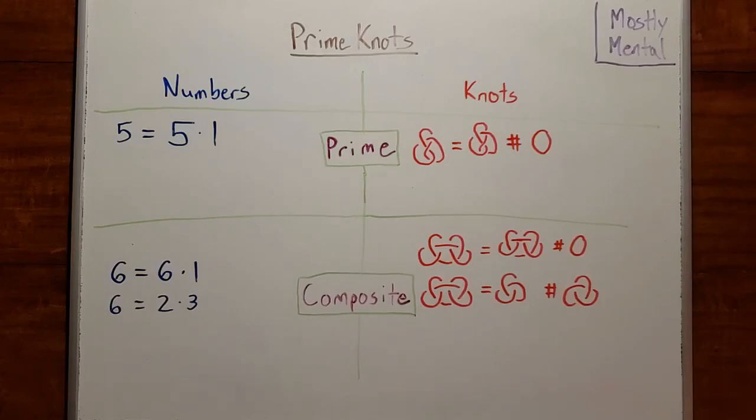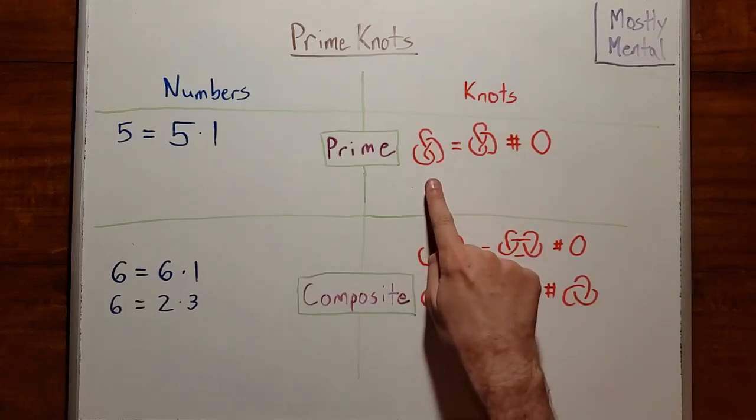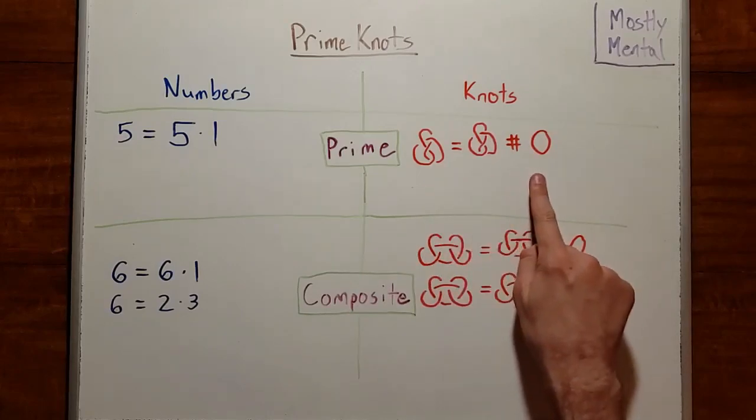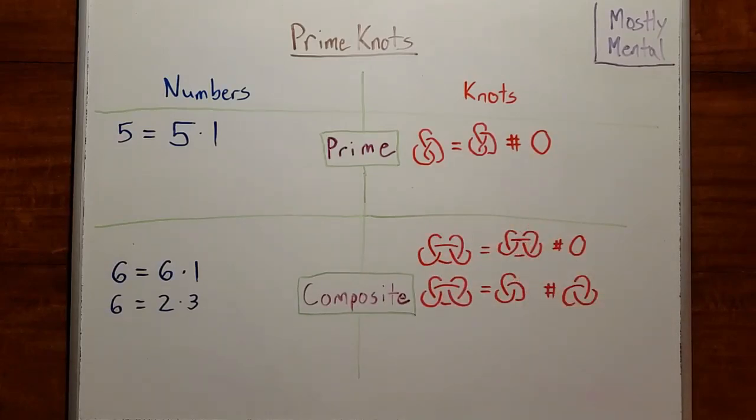By analogy, let's look at how a knot can be expressed as a connected sum. For instance, the figure eight can only be written as the sum of a figure eight and an unknot, so it only has a trivial decomposition. But a square knot is the sum of two trefoils. It can be decomposed into two simpler knots. So it would make sense to call the figure eight prime and the square knot composite.